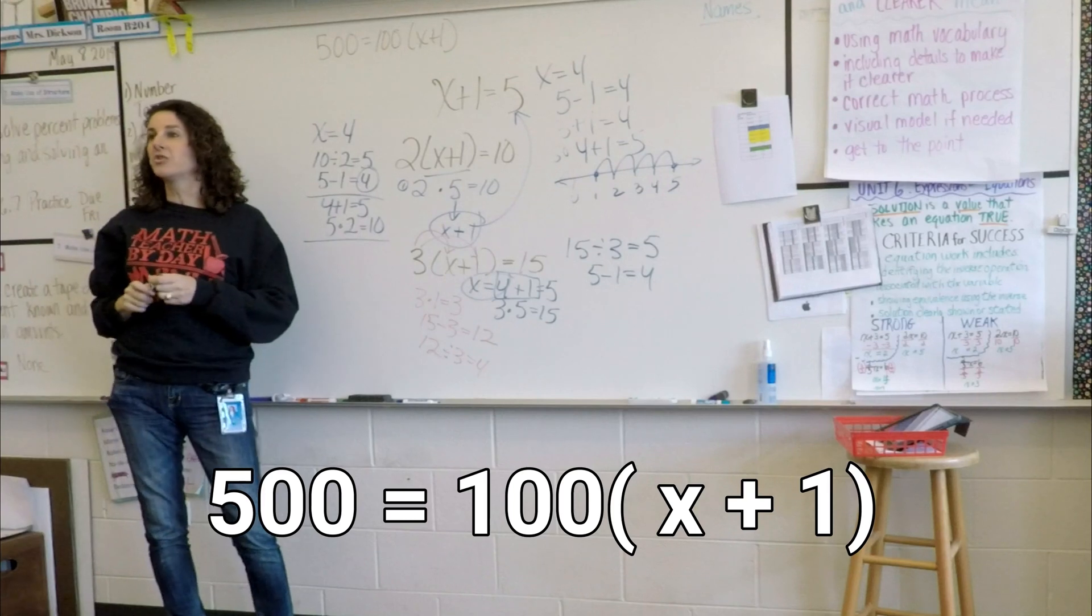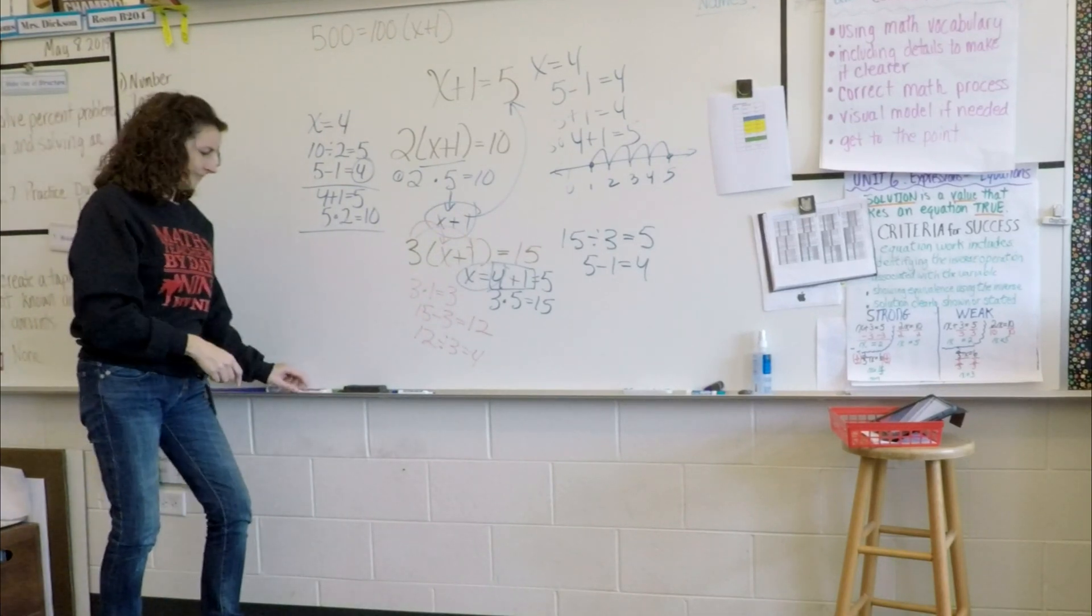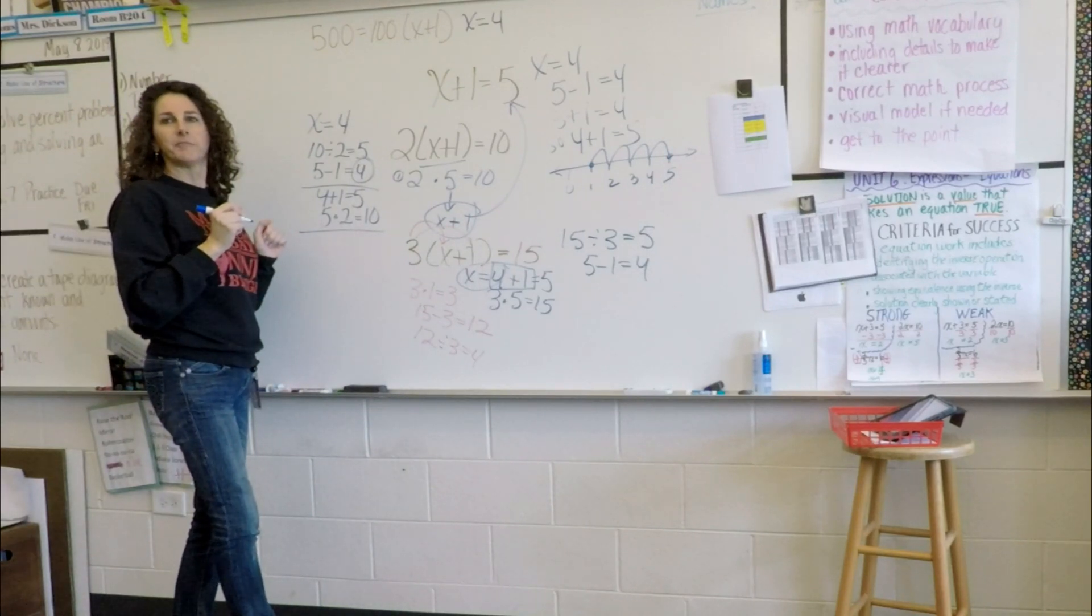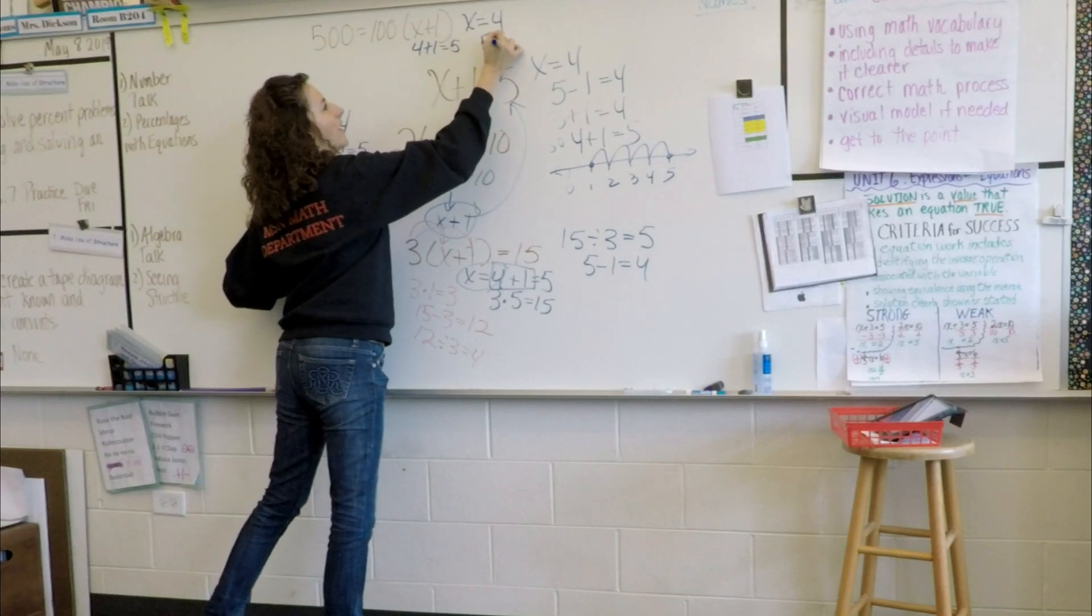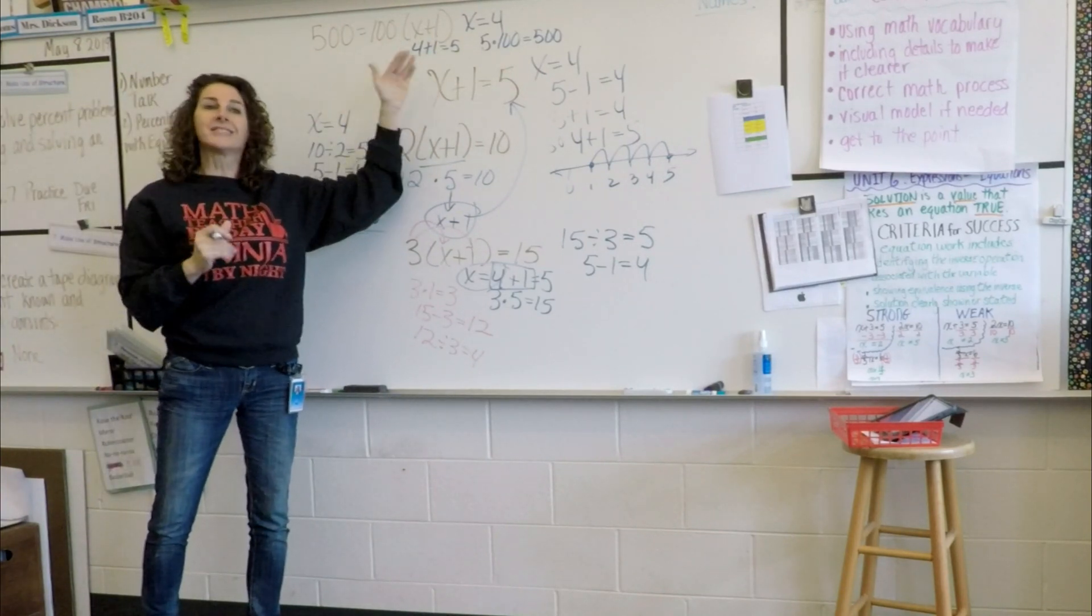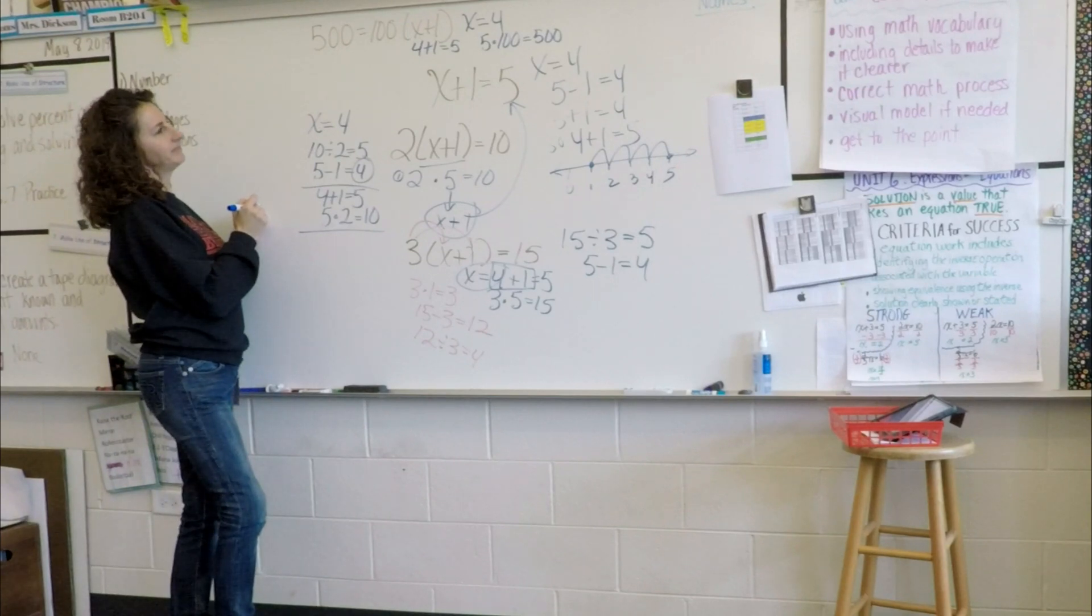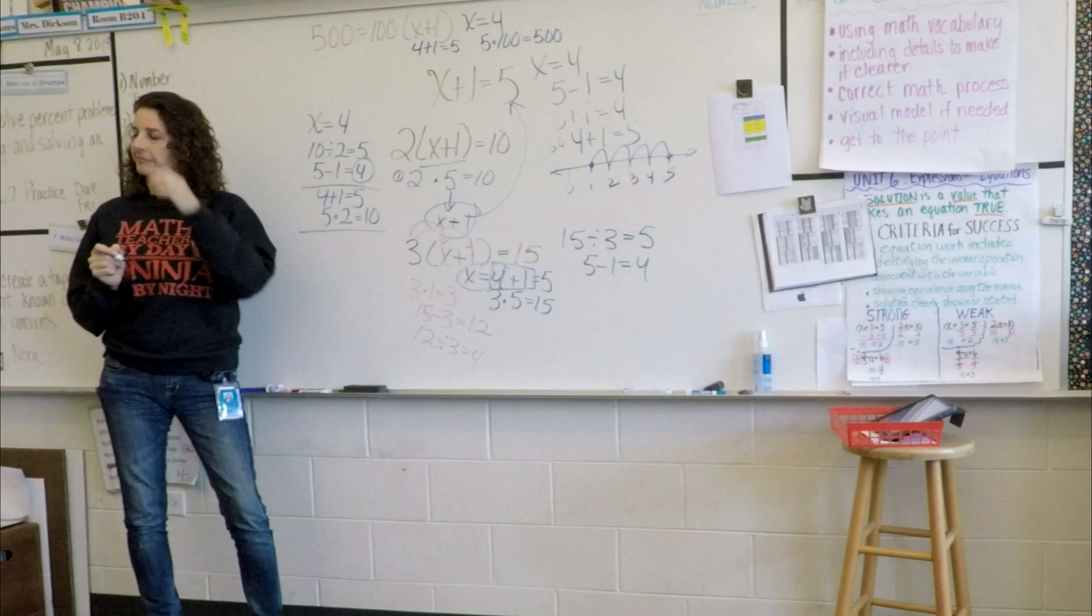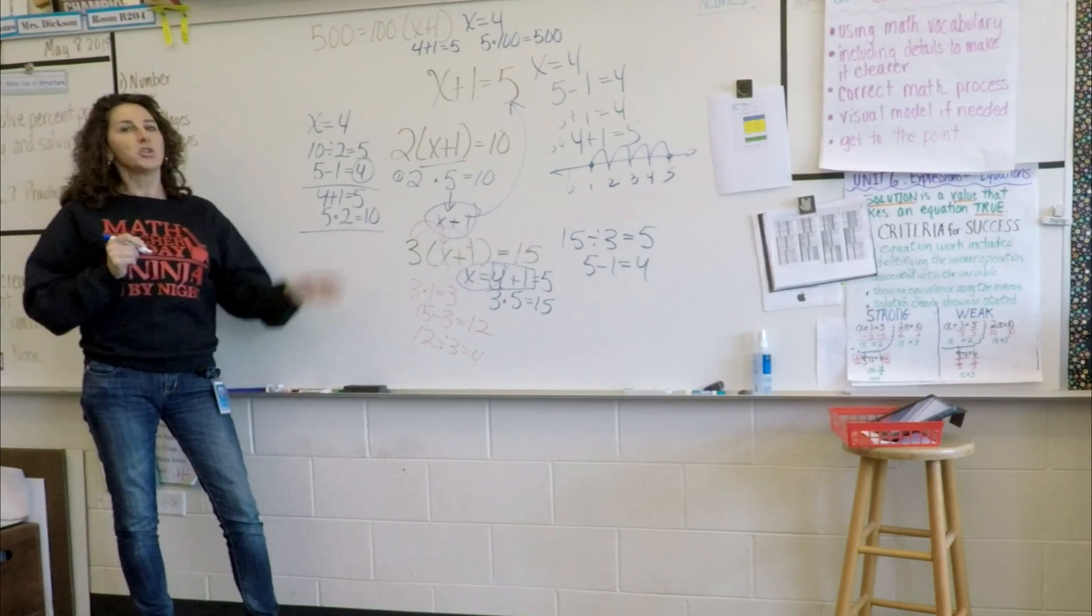500 equals 100 times the quantity x plus 1. You guys are doing fantastic thinking. Ashley? So I think the solution to x is 4. You said x equals 4. Do you guys agree? Because I think 4 plus 1 equals 5. 5 times 100 is 500. Anybody else have the same solution and could either restate her reasoning or tell me a different path to that solution? Kayden? So I just realized that there was a pattern. You saw a pattern. Tell me about the pattern. That x was always 4. x has always been 4 in all the other problems. So I just knew that x was 4 because it was a pattern.